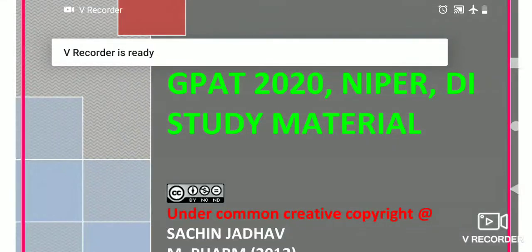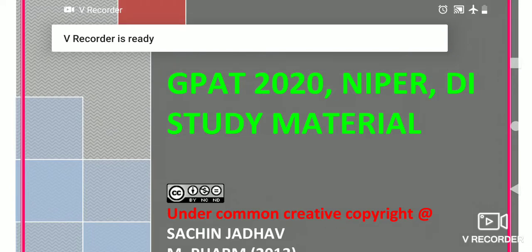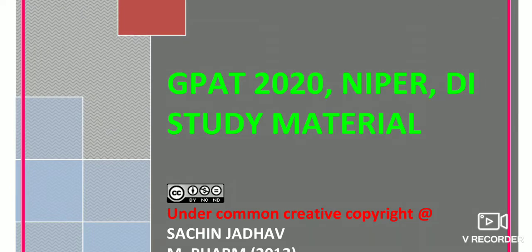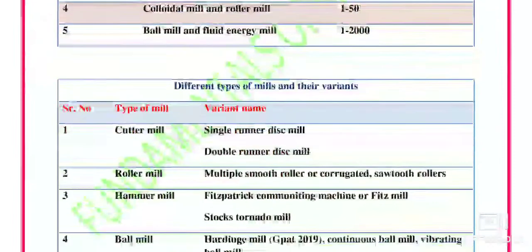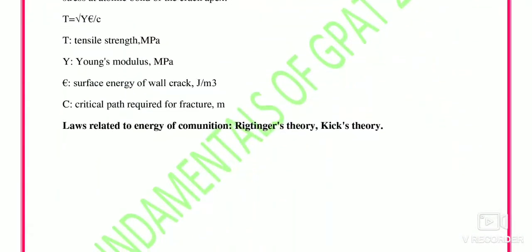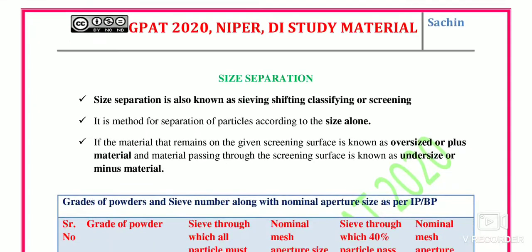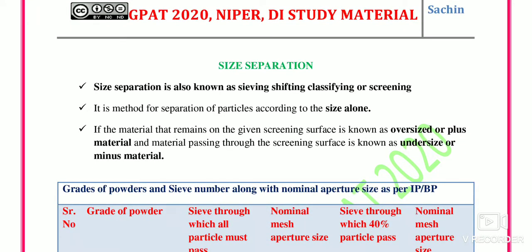Welcome to Fundamental Pharmacy. Today we are going to discuss size separation, which is an important chapter from a GPAT point of view. Size separation is also known as sieving, shifting, classifying, or screening. It is the method of separation of particles according to their size only. If the material remains on the screen, it is known as oversize or plus material, and if the material passes through the screen surface, it is known as undersize or minus material.